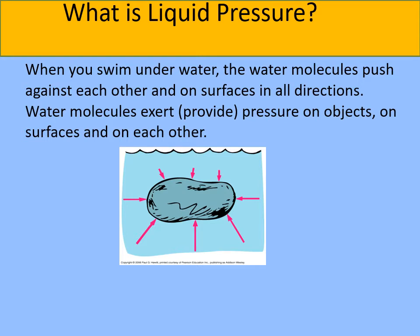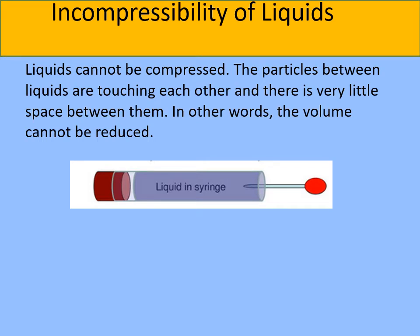Now we move on to liquid pressure. If you have any object immersed in water, the pressure on that object is due to all the water molecules constantly colliding with it. This pressure is exerted in all directions, as you can see on the diagram. Liquids themselves cannot be compressed because the particles in the liquid are really really close together — they're touching each other, so there is literally no space between them to compress. You cannot decrease the volume of a liquid.